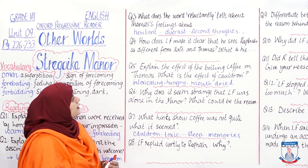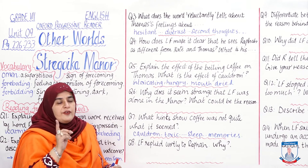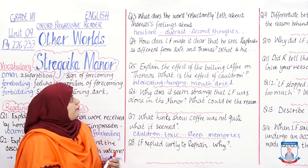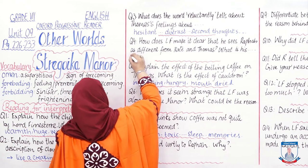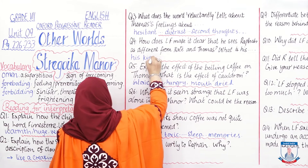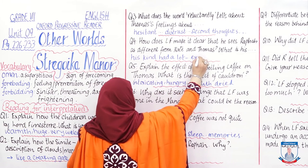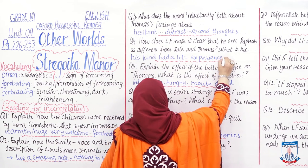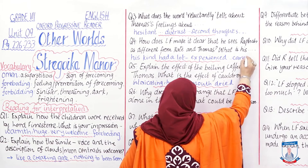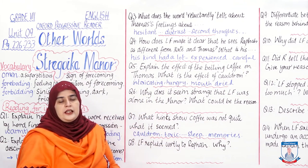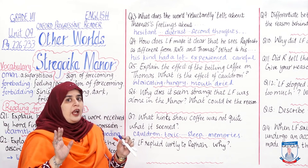Question: How does Lord Fenister make it clear that he sees Rafa as different from Kate and Thomas? What is his behaviour towards Rafa? Rafa was African. Lord Fenister said that his kind had seen and experienced a lot. So Lord Fenister was a little more careful towards Rafa — because he knew Katie and Thomas could be easy prey to his plan, but Rafa would definitely react. That is why he was more careful towards Rafa.